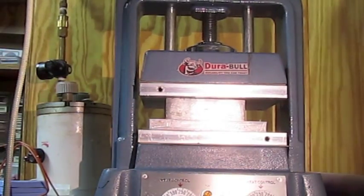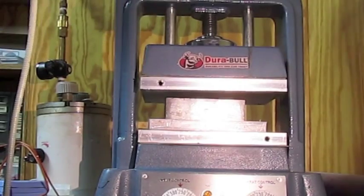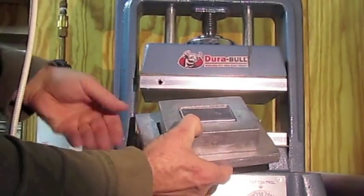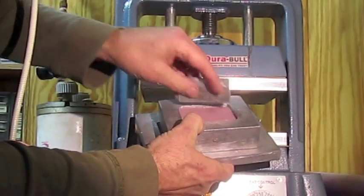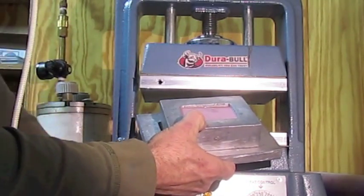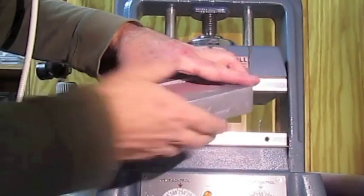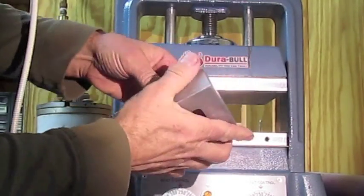And there. It should come right out. Yep. So you can see that the aluminum has pushed the mold down in there. And now I can just take this guy right out very easily.